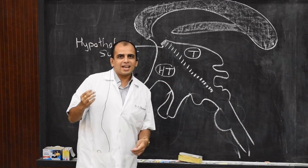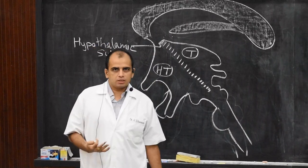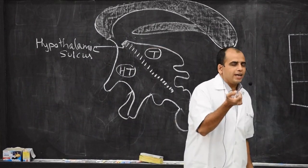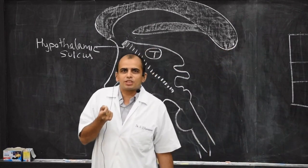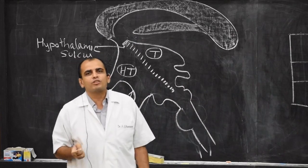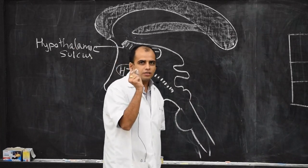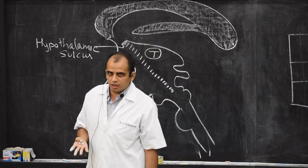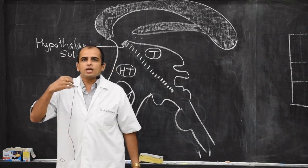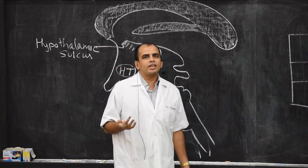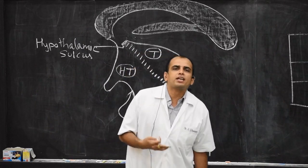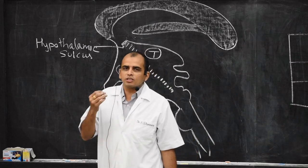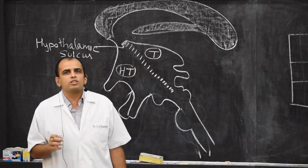The hypothalamus lies below the thalamus. Anatomically, the size of the hypothalamus is approximately 0.3% of the entire brain size, so it is very, very small. But functionally it is very important because it regulates the autonomic nervous system of our body. It regulates water intake, food intake, sleep, and all the hormonal controls of our body. Although the size is very small, functionally it is a very important part.